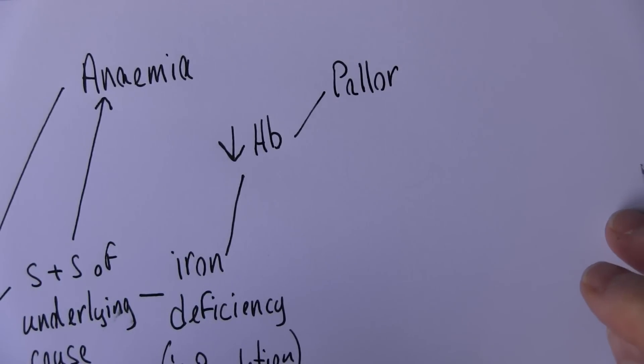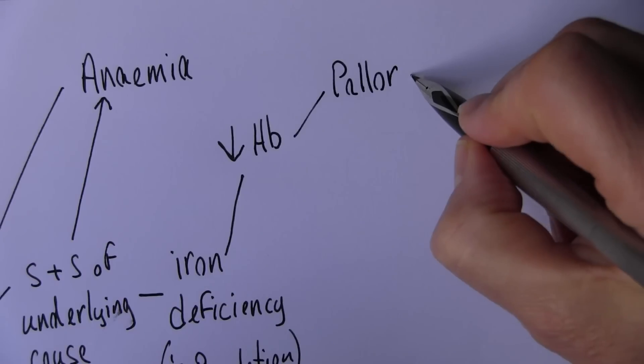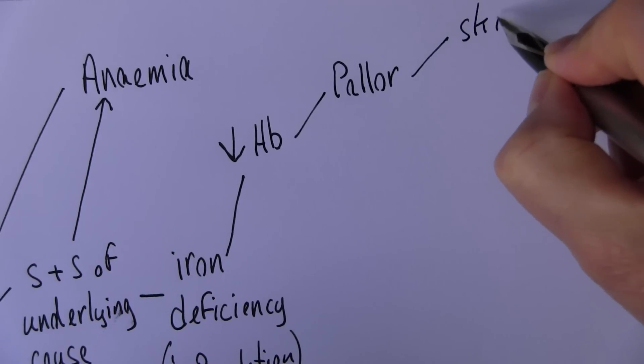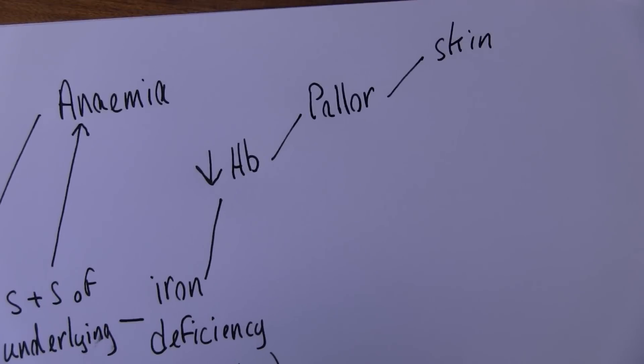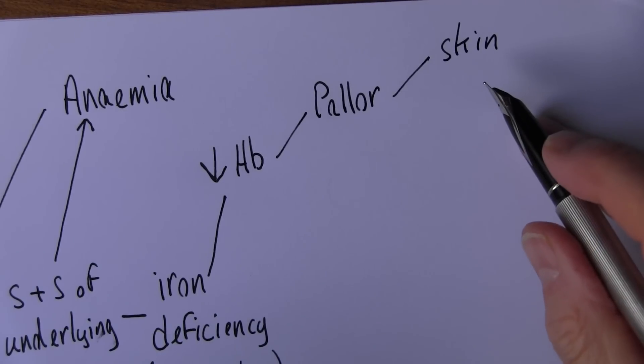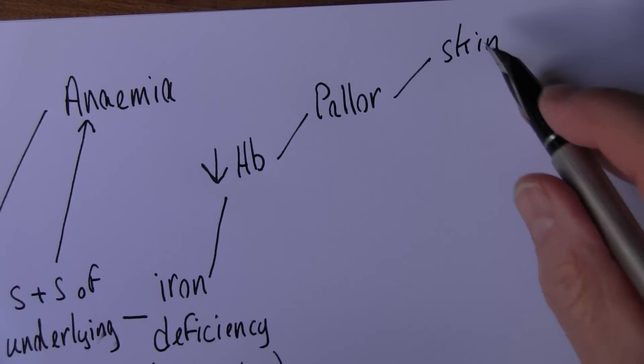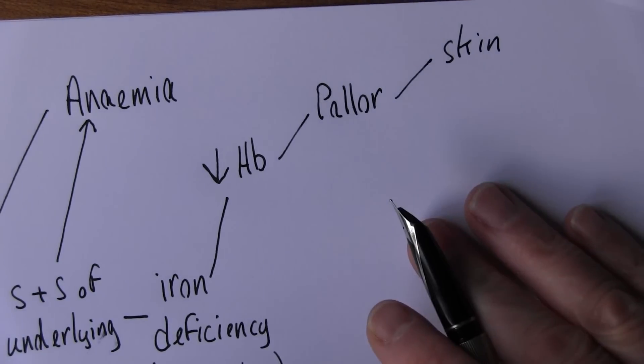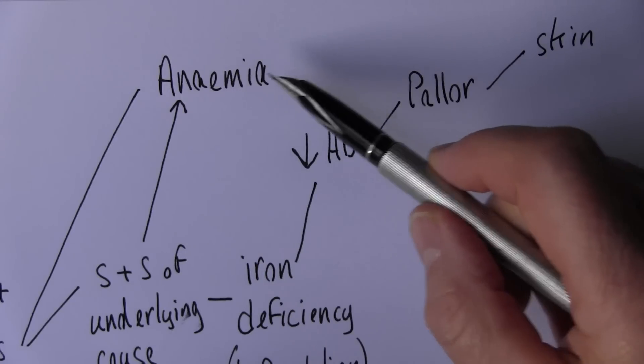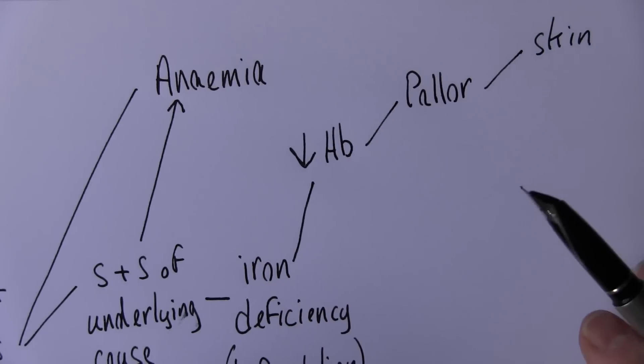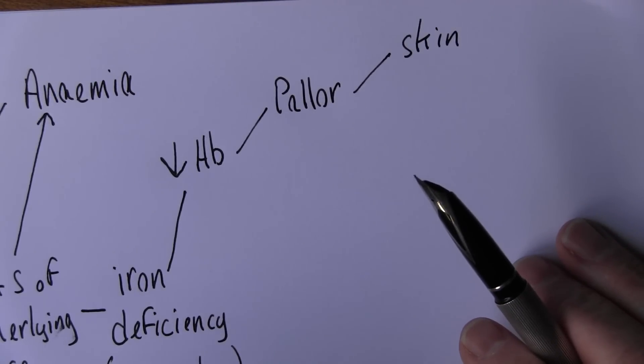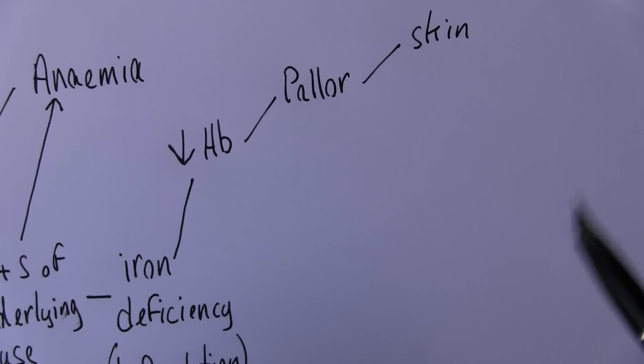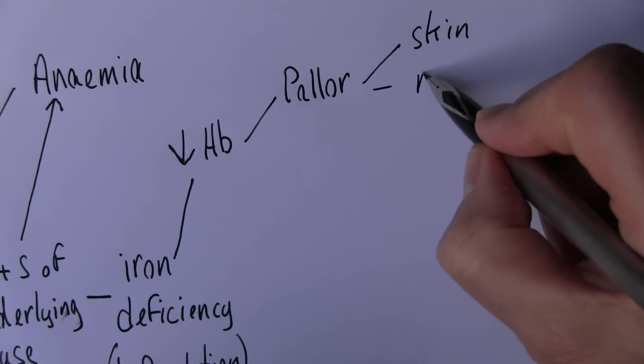Pallor just means pale really. And we're going to see this in the skin. So in iron deficiency the person looks pale. And we're going to get these features regardless of any features of anemia. These are as well as any features of anemia that might be present. Paleness in the skin. Paleness in the mucosa.